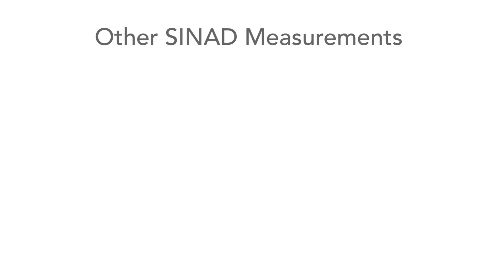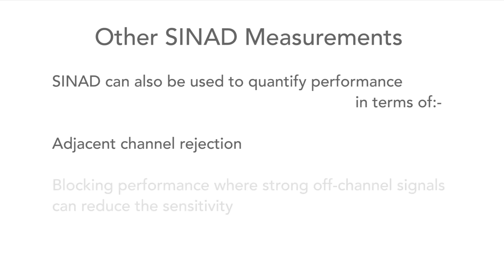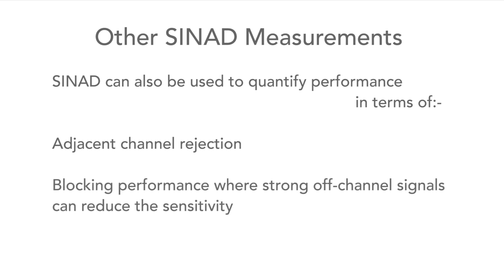Although SYNAD is primarily used to quantify the sensitivity of a radio, it can also be used to indicate performance in terms of adjacent channel rejection and the radio's blocking performance, where strong off-channel signals may cause a reduction in sensitivity. These measurements are made by looking at the degradation of SYNAD in the presence of such signals.